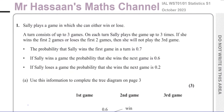Question number one. Sally plays a game in which she can either win or lose — nothing in between. A turn consists of up to three games. If she wins the first two games or loses the first two games, she will not play the third game. The probability that Sally wins the first game is 0.7. If Sally wins a game, the probability she wins the next is 0.6. If Sally loses a game, the probability she wins the next is 0.2.